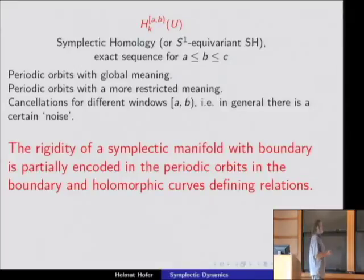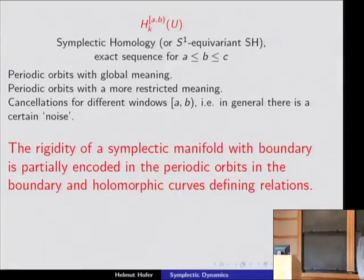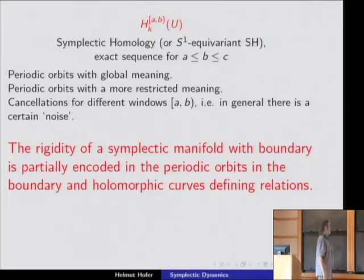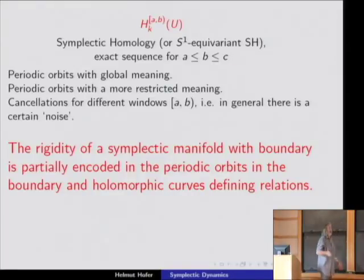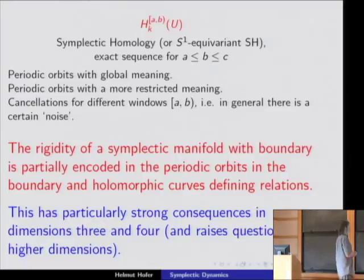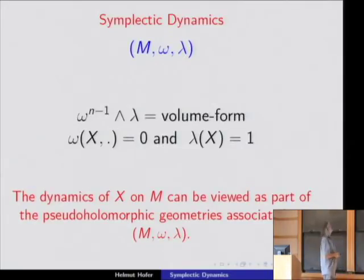In some sense, one can make rigorous — which takes a lot of time — that the rigidity of a symplectic manifold with boundary is partially encoded in the boundary and holomorphic curves defining relations between them. This has particularly strong consequences in dimension three and raises questions in higher dimensions. Let me talk about how we are going to use this in dynamics.